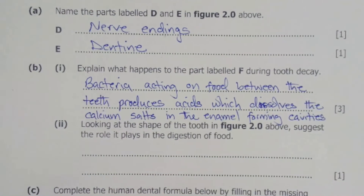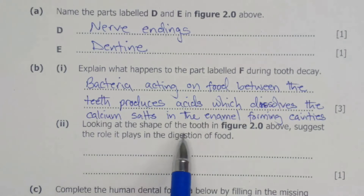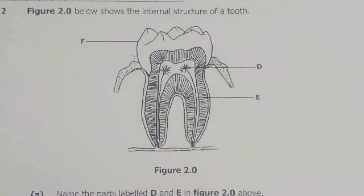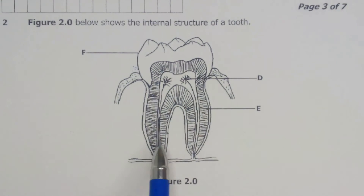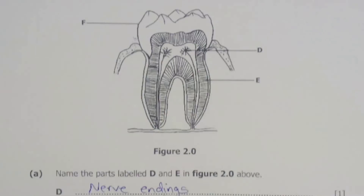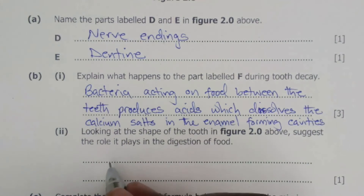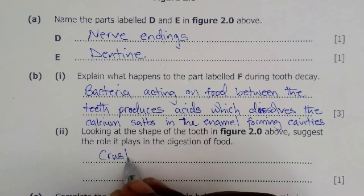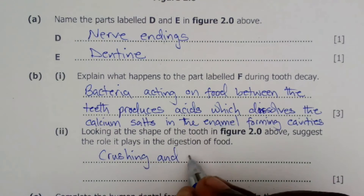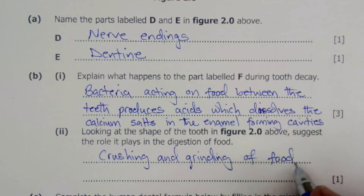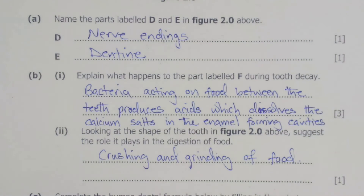The next part of the question is B2, which says: looking at the shape of the tooth in figure 2.0, suggest the role it plays in the digestion of food. The tooth shown here has two roots. Teeth which normally have two roots are premolars. The premolar's function is to crush and grind the food, so this tooth is used for crushing and grinding of food.